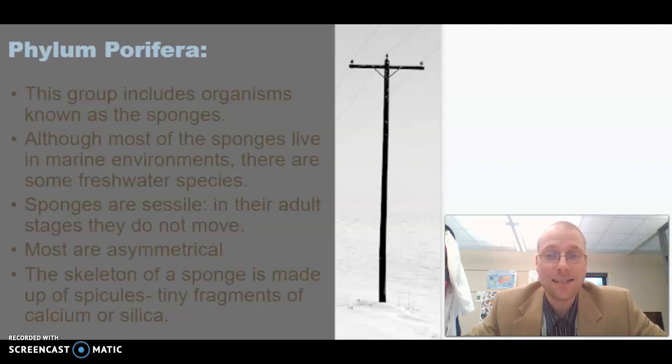Sponges are sessile, that means they don't move. They don't have muscular systems. And most sponges are asymmetrical. They are the only group of animals where asymmetry is the norm. Their skeleton, they have a skeleton made up of spicules, which are tiny fragments of calcium, like our bones, or silica, which is what's in sand.